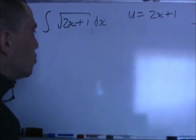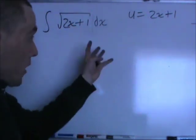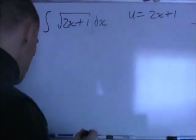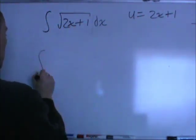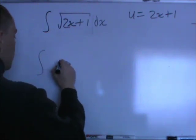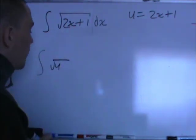Alright, so what it is that I would want to do now, is do the actual substitution. And so, wherever I find 2x plus 1, I'll replace that with u, and that's going to leave me with the integral of the square root of u.